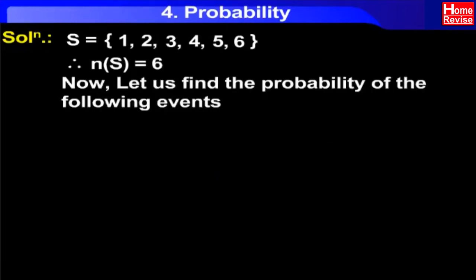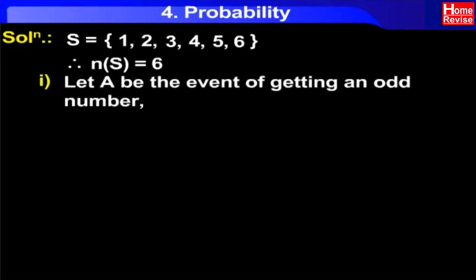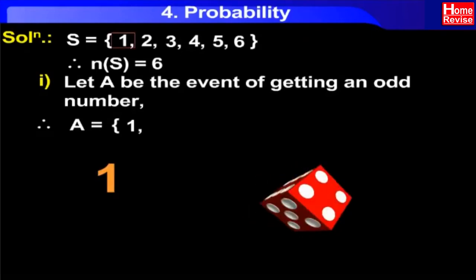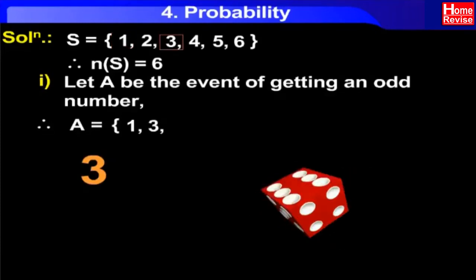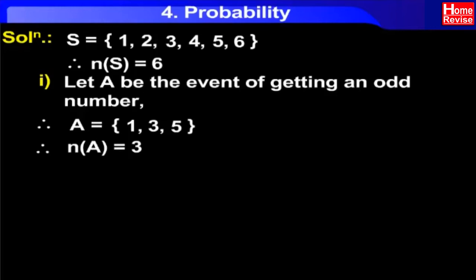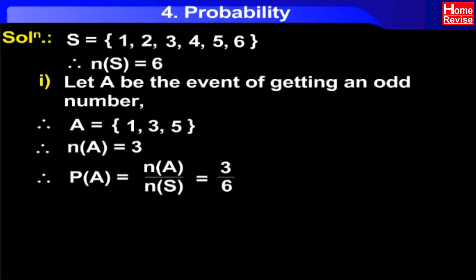Now let us find the probability of the following events. Number one: let A be the event of getting an odd number. Therefore, A = {1, 3, 5}. Therefore, N(A) = 3. Therefore, P(A) = N(A) / N(S) = 3/6 = 1/2.